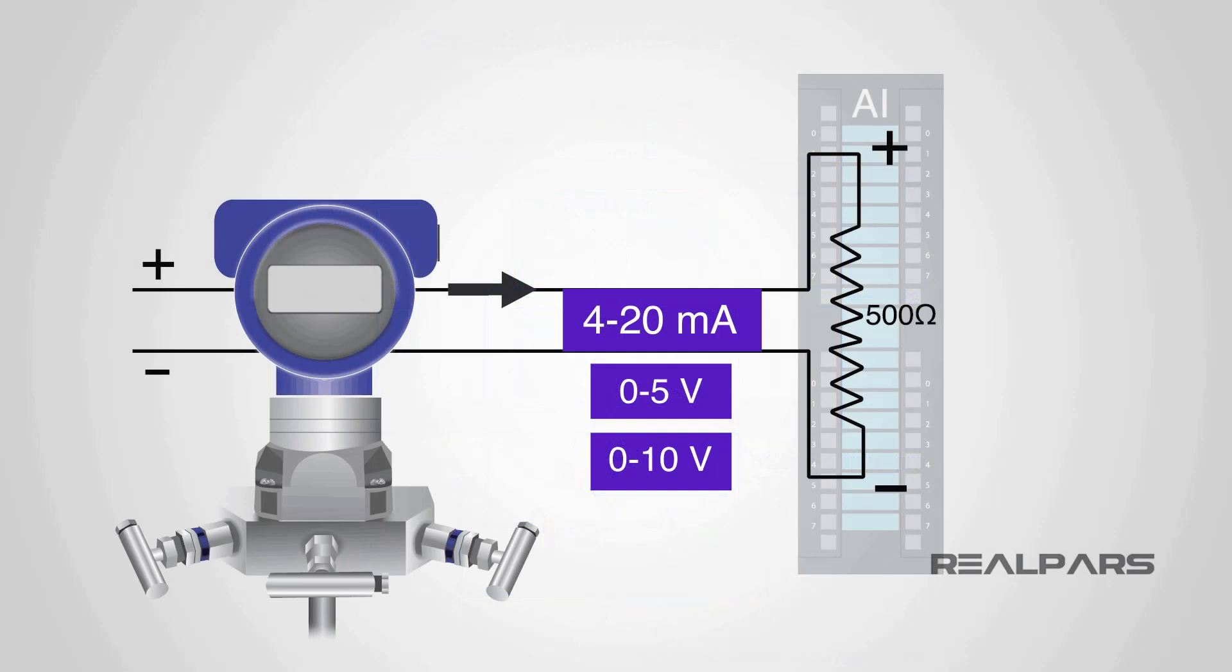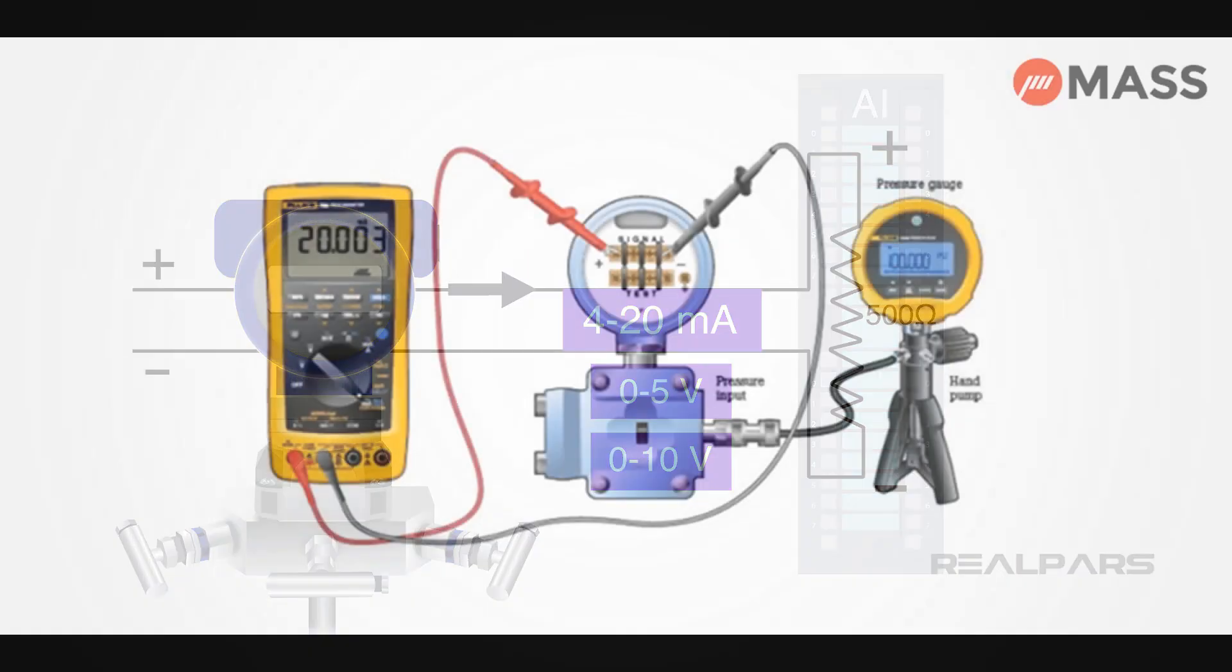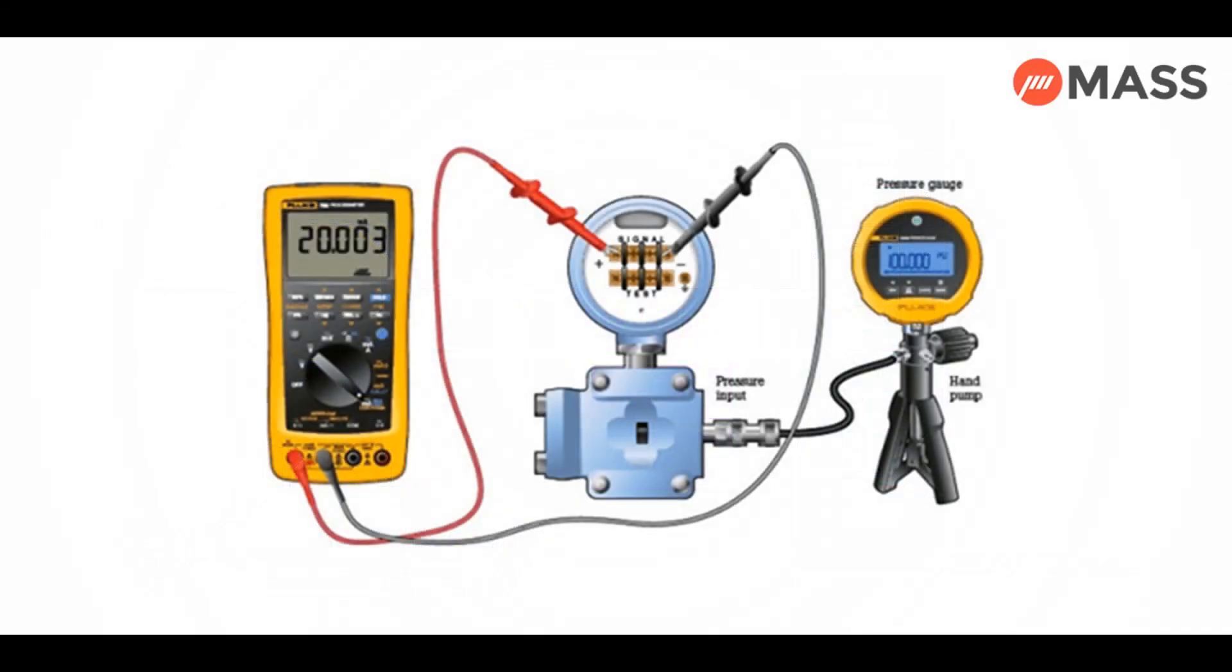The electrical signals from the high side and the low side pressure sensors are then processed by the transmitter's electronics. The transmitter calculates the differential pressure based on the difference between the signals from the two sensors. The differential pressure is then converted into an output signal, often a 4 to 20 mA current signal or other standardized signal. The DP transmitter is calibrated to ensure its output signal accurately represents the differential pressure and, by extension, the flow rate.